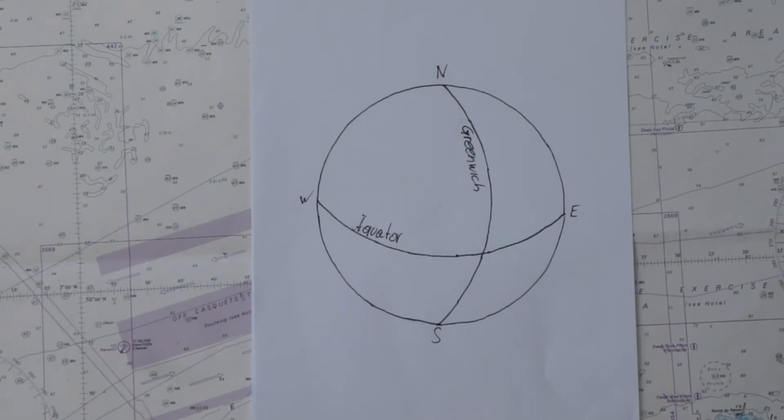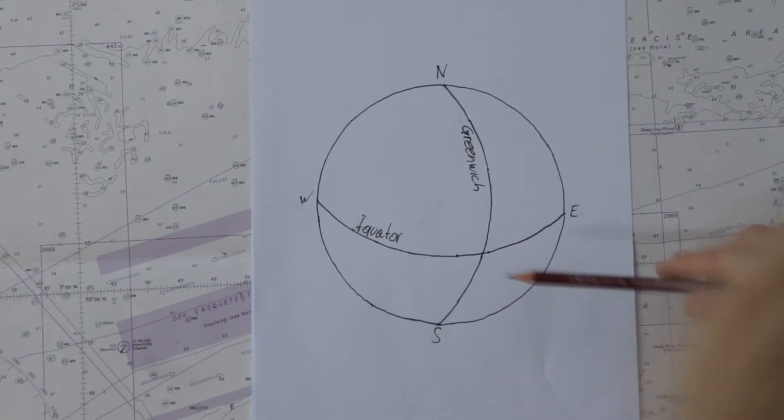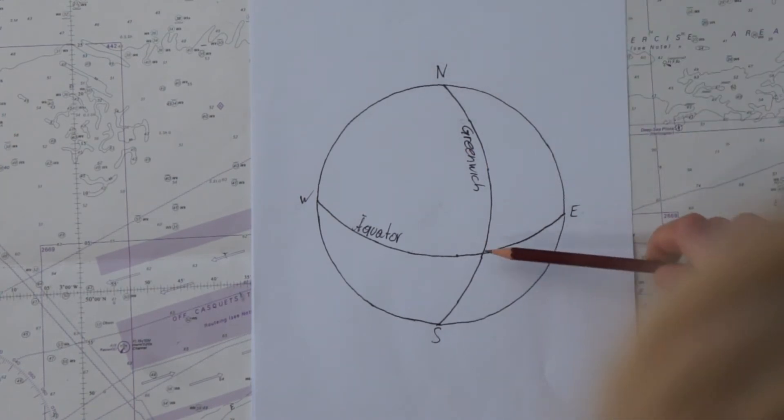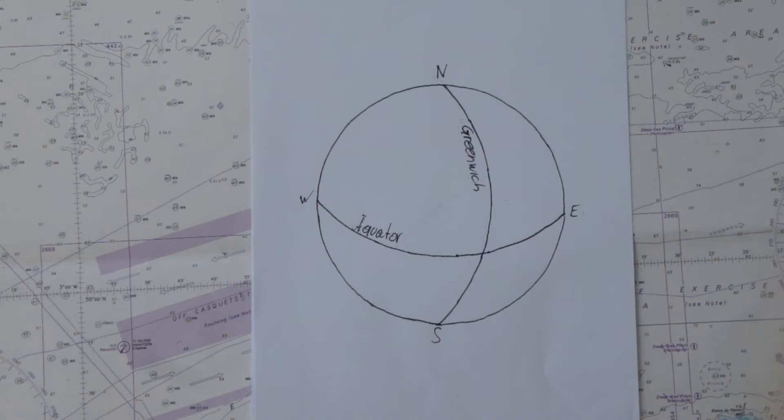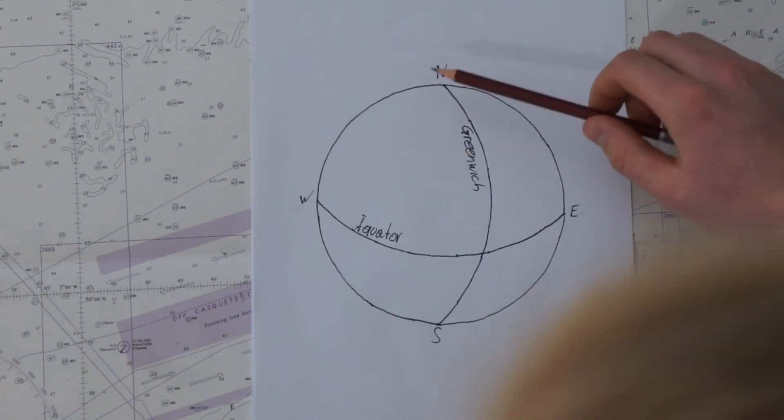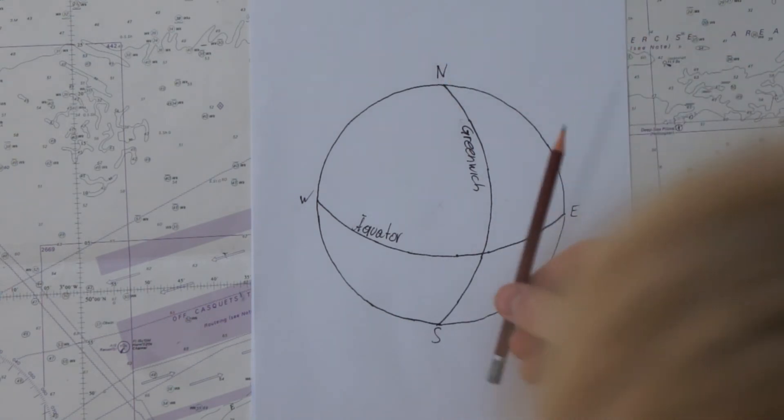Every coordinate system needs a point zero. We have two coordinates. We have latitude starting from the equator going north or south and we have a vertical axis. The longitude starting from the Greenwich meridian which goes from the North Pole to the South Pole and the longitude goes to the east or to the west.